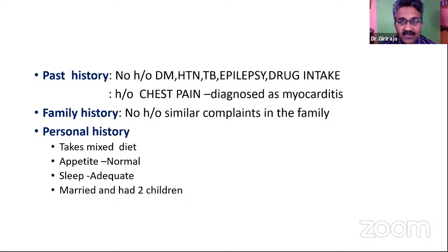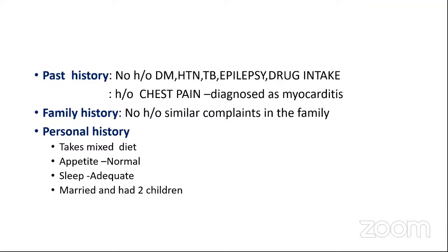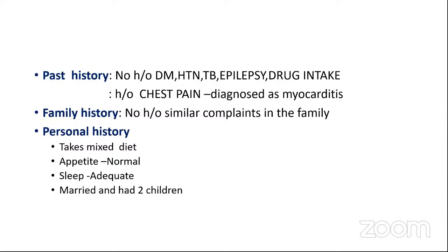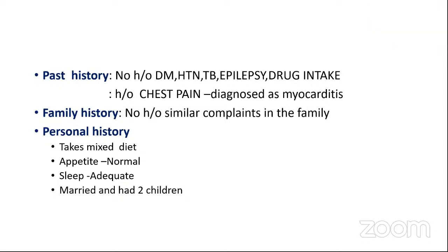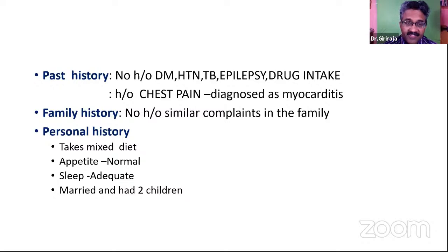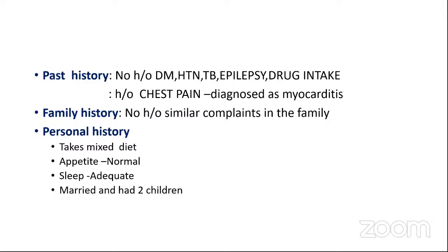Apart from inflammatory myopathies, persistent weakness causes include endocrine disorders and drug/toxin-induced myopathies. Muscle dystrophies occur over years with family history. If face and scapula are involved with upper limb proximal weakness, consider facioscapulohumeral dystrophy. If face and distal hand muscles are involved with baldness and cataract, consider myotonic dystrophy. For eye-involving myopathies: oculopharyngeal dystrophy, mitochondrial myopathies, and thyroid myopathies. Inclusion body myositis: upper limb finger flexors and lower limb quadriceps involved. Dropped head syndrome: causes include ALS, myasthenia gravis, and polymyositis.